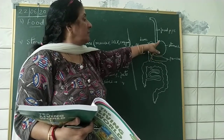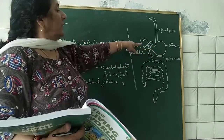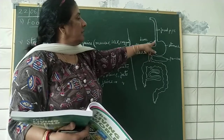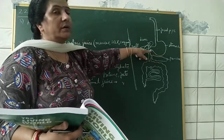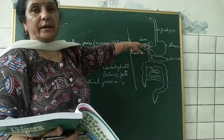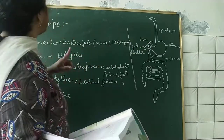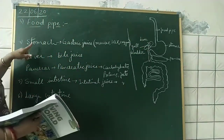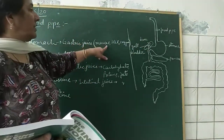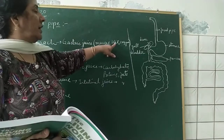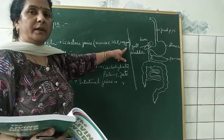Stomach is a muscular organ. It is a sac-like structure. Its inner walls secrete gastric juice. Gastric juice contains mucus, hydrochloric acid, and enzymes.